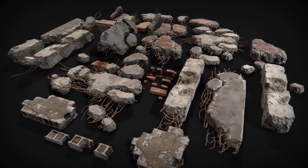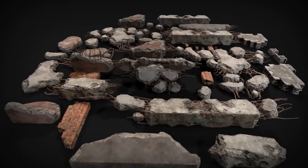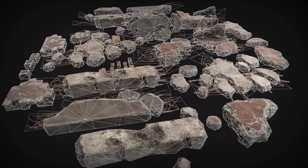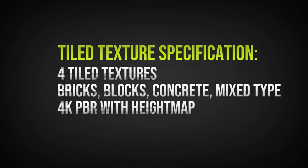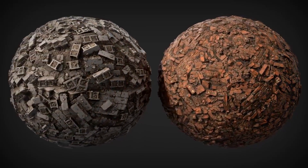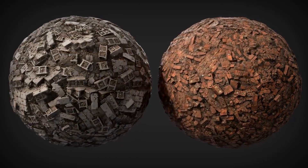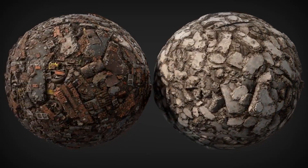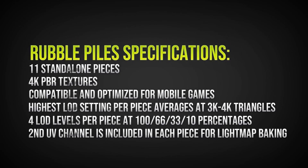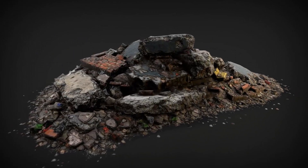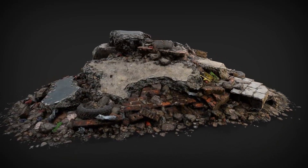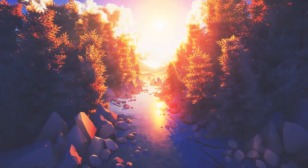Moving on to number seven, we have Rubble and Debris Modular Set. The contents of this pack by Lochner Studios are set in a realistic setting and made with current and next generation in mind. The pack includes 11 standalone rubble piles, 50 standalone debris pieces, tile textures with height maps, concrete bricks, blocks, and mixed style types, and 4K PBR textures. All models come with several LOD (Level of Detail) levels and light map UVs to fit every project, and the whole pack is compatible and optimized for mobile games.